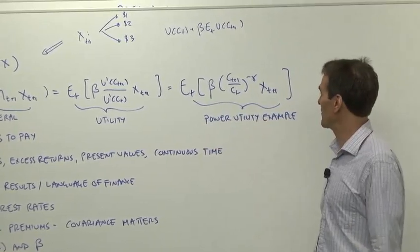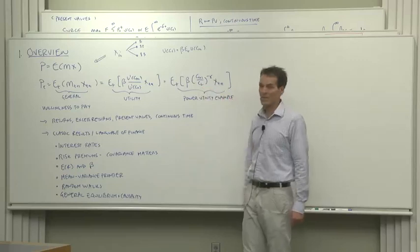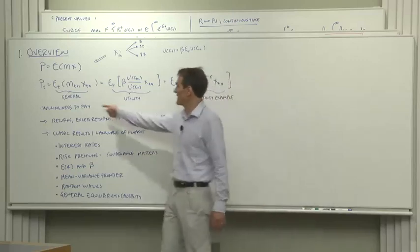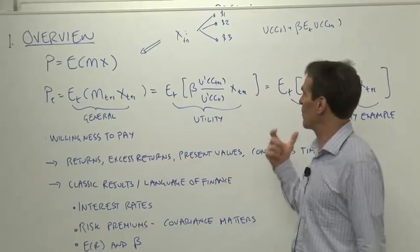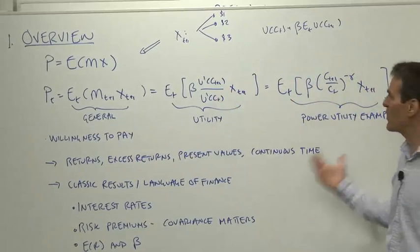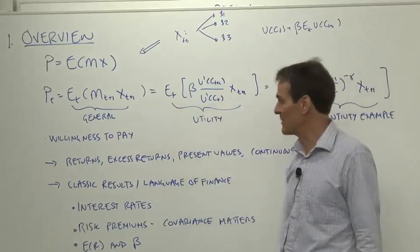It's not the most general utility function, but it's very handy to work things out and see how they work. That's where we got. Our basic concept of evaluation here was willingness to pay. We worked out what an investor with this utility function and that consumption would be willing to pay for a marginal bit of the asset, and that was our concept of evaluation.